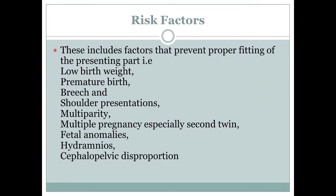What are the risk factors for cord prolapse? These include factors that prevent proper fitting of the presenting part, such as low birth weight, premature delivery, breech and shoulder presentation, multiparity, multiple pregnancy — most especially involving the second twin — fetal anomalies, hydramnios, and cephalopelvic disproportion.